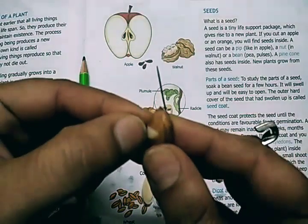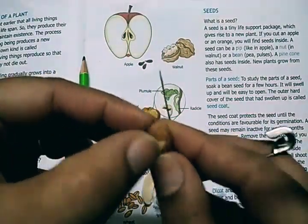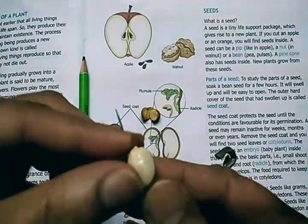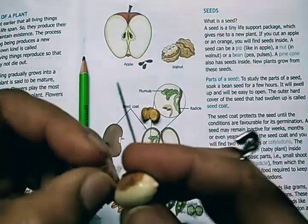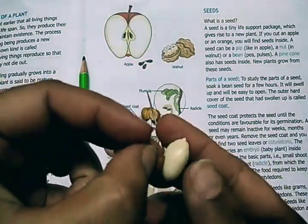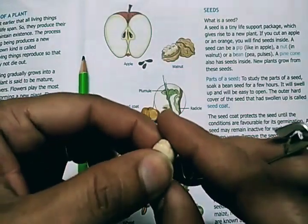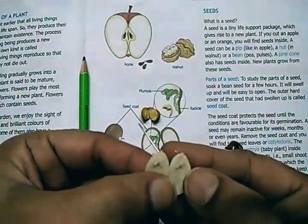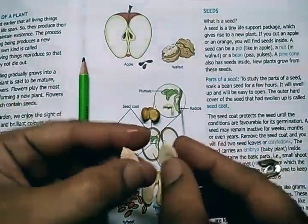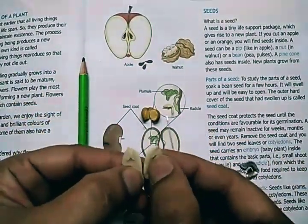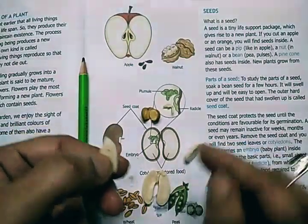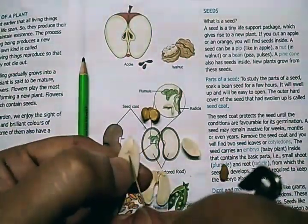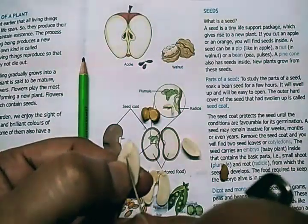Similarly, this is a groundnut seed. When I remove the seed coat and split it into two, you can see the structures inside. These are the two cotyledons. And here is the baby plant — you can see it is so clearly visible. This is the baby plant.